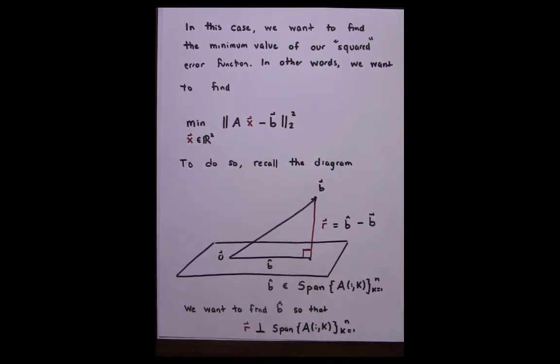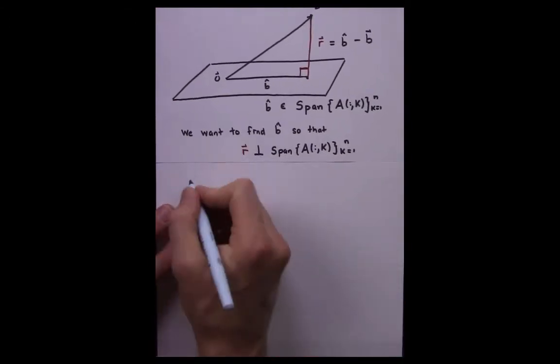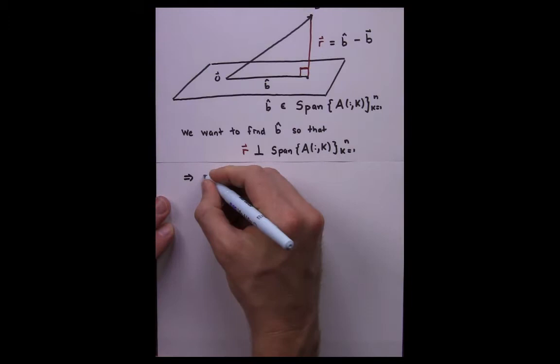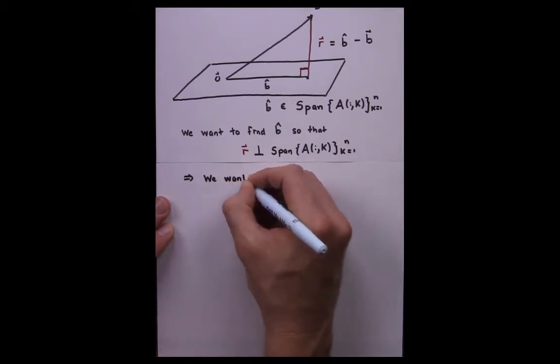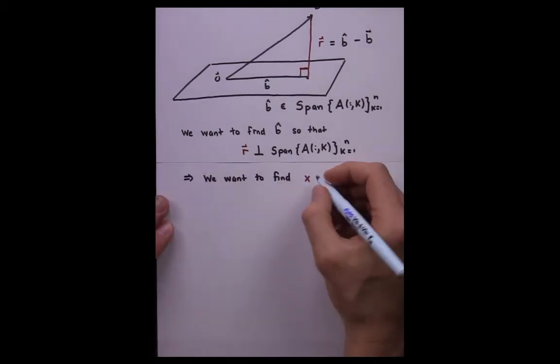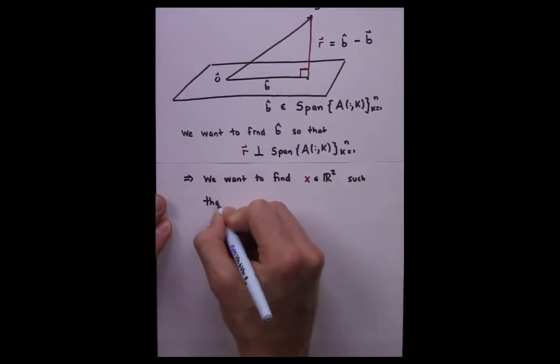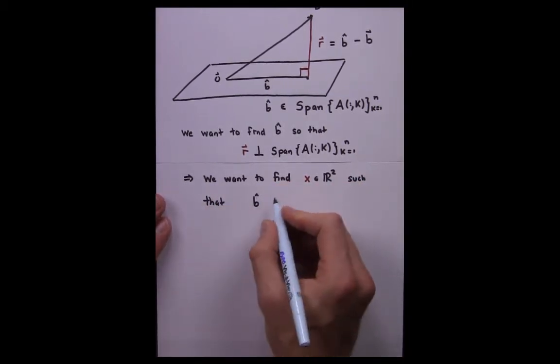Recall that we can write B hat as A times X for some unknown X, because the entire idea of B hat was that it was some vector in the span of the columns of A. In other words, we could write B hat as A times X for some unknown value X.